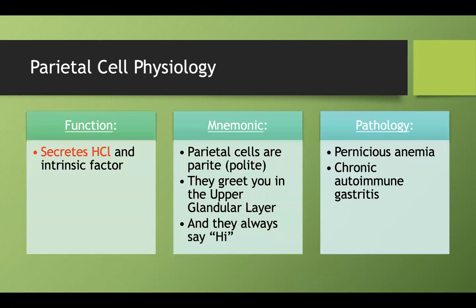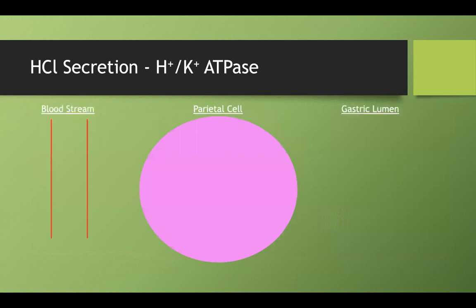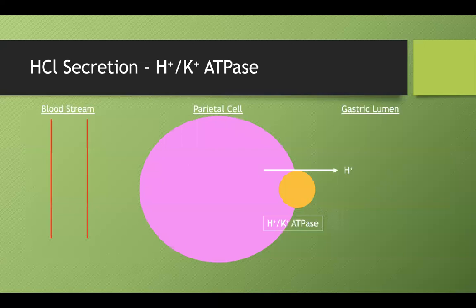Let's talk about how parietal cells secrete hydrochloric acid. Here's a parietal cell — I'm going to draw the bloodstream and the gastric lumen just to give you a frame of reference. Parietal cells secrete hydrogen ions into the gastric lumen using the hydrogen-potassium ATPase. For every hydrogen ion that goes into the lumen, it needs to reabsorb one potassium.